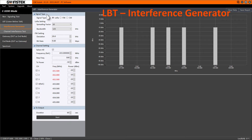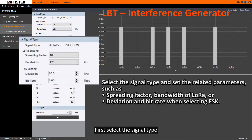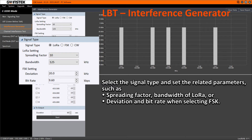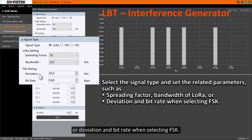First, select the signal type and set the related parameters, such as spreading factor, bandwidth of LoRa, or deviation and bit rate when selecting FSK.